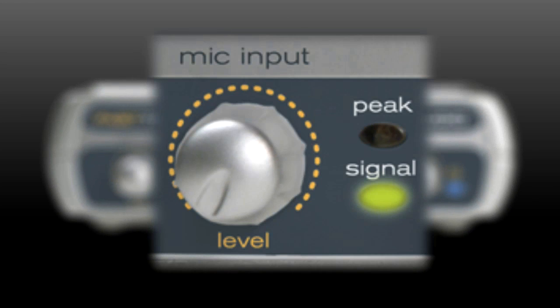On the front of the FastTrack USB, the knob on the left is used to adjust the mic input level. This only affects the XLR mic input, not the guitar input.